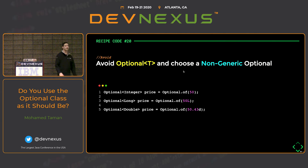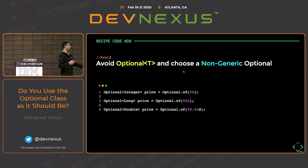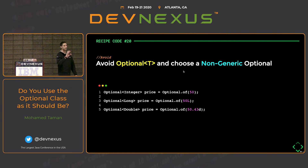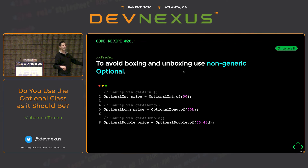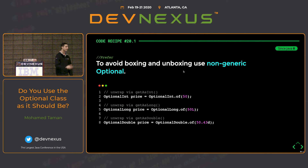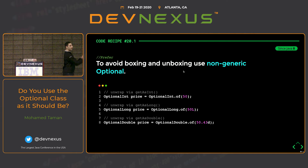Another anti-pattern: using Optional<Integer>, Optional<Double>, or Optional<Long> for primitive types introduces boxing and unboxing, which is expensive in terms of performance. Java already provides OptionalInt, OptionalLong, and OptionalDouble for primitives. Use these when working with primitive data types to avoid boxing overhead. All of these are available since Java 8.